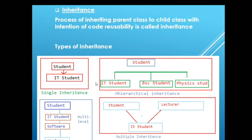The diagram is self-explanatory. In case of single inheritance, a parent will have a single child. In case of hierarchical inheritance, a parent can have multiple child classes. In case of multilevel inheritance, a parent will have its own child class, and that child class in turn will have another child class, and so on — this is multilevel inheritance.